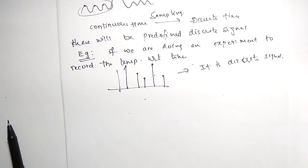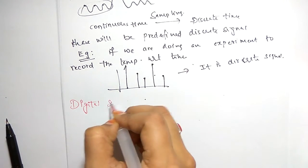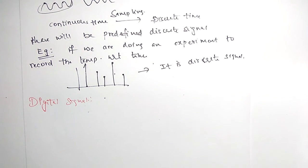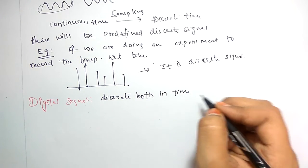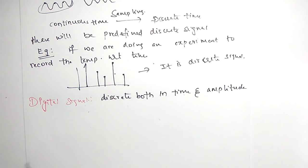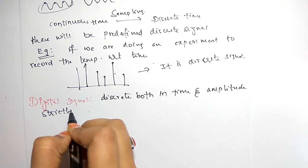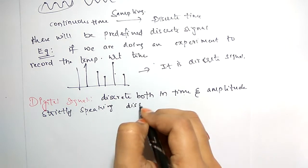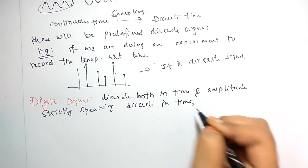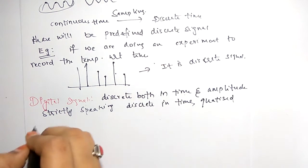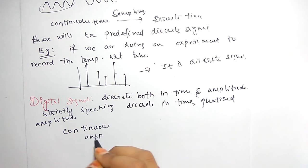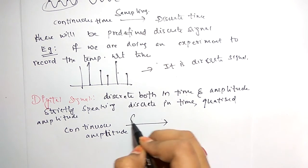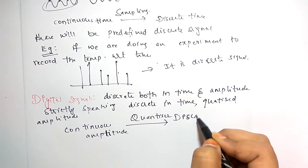The last type of signal is the digital signal. A digital signal is discrete both in time and in amplitude — strictly speaking, it is discrete in time and has quantized amplitude. To convert a continuous amplitude to discrete amplitude, you need a quantizer, which changes it to discrete amplitude. These are the three types of signals.